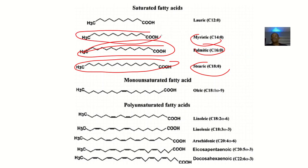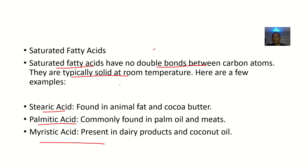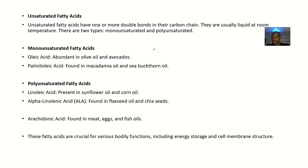A tip for learning how to draw these structures: myristic acid, palmitic acid, and stearic acid all have COOH at the end and CH3 at the beginning. You just need to know the length of the carbon chain by counting — one, two, three... up to fourteen for palmitic — then count the chain for myristic and stearic acid similarly, and you're done.